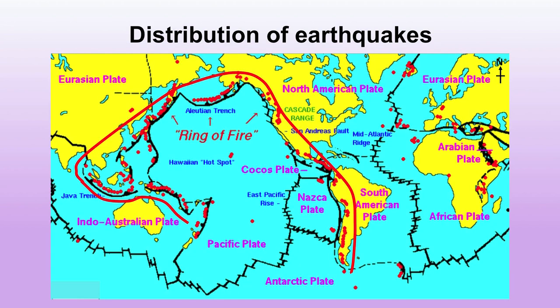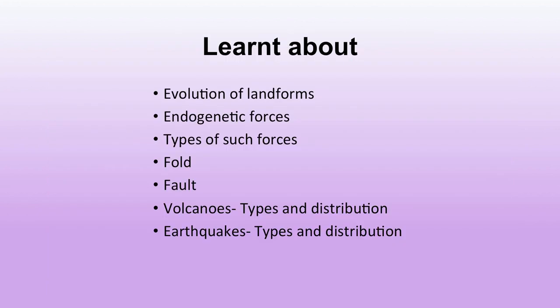The distribution of earthquakes coincides with that of volcanoes. Two important belts where earthquakes are most frequent are the circum-Pacific belt and the mid-world mountain ridge, similar to the occurrence of volcanoes. In the map you can see this distribution.